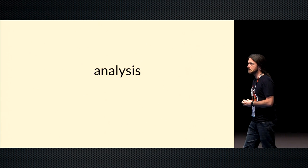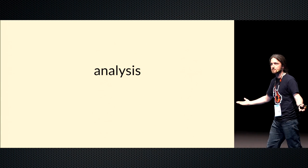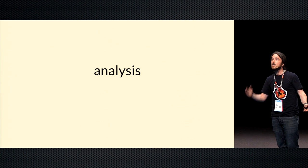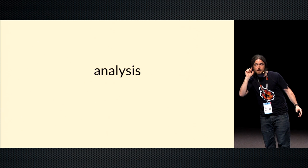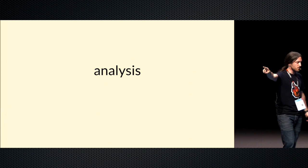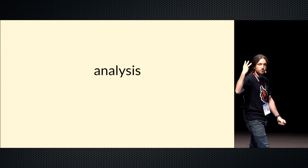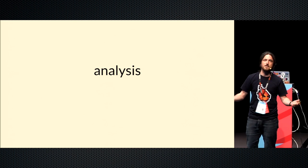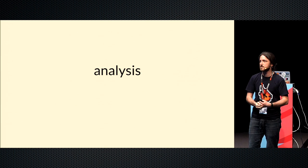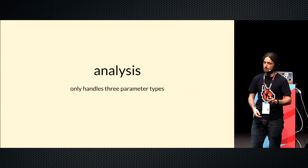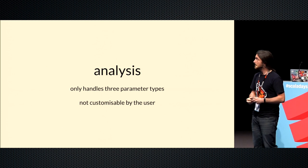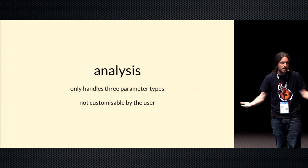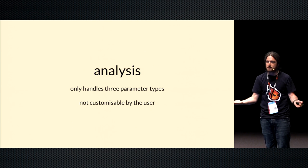However, there's a bunch of problems with it. Can anyone think of a problem with this piece of code? It is not extensible to new types. It only knows about three types. We can extend it to Double and Long and all these other types, but we can never extend it to all the types the user knows about. So it's not extensible, and that's a fatal flaw. Anyone who wants to construct values is going to want to construct values that contain things of their own types.